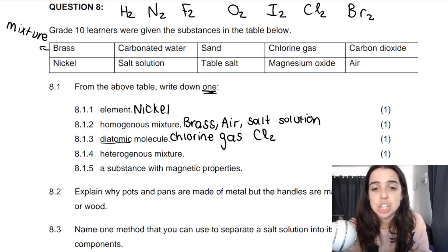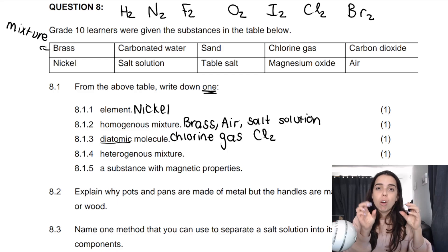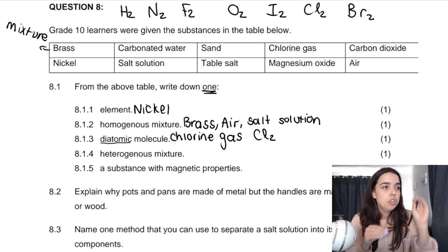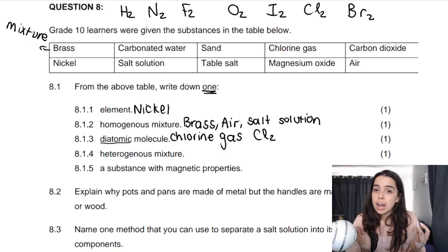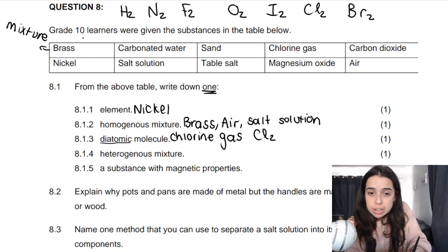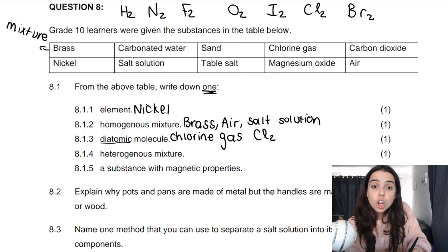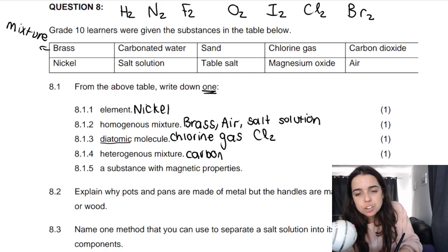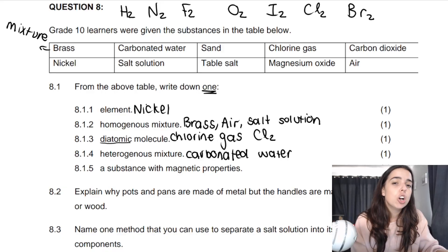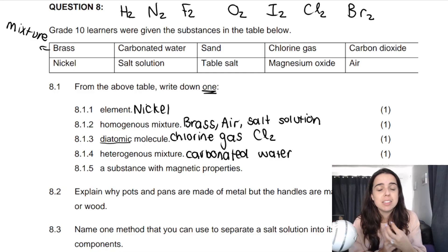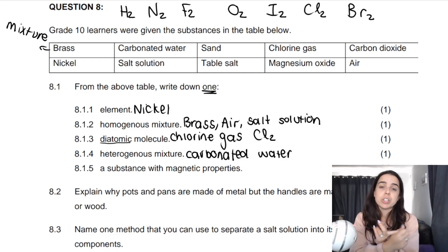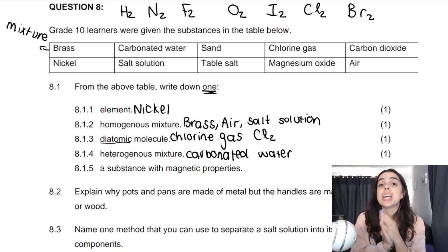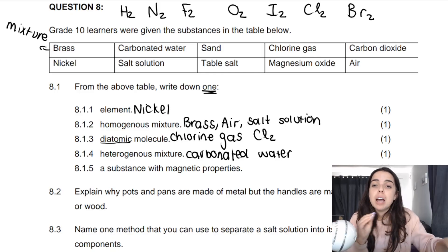A heterogeneous mixture is one where we can see the different components in the mixture — it's not uniform and you can tell the components apart with the naked eye. In this case, the correct answer — and the only answer — is carbonated water. You might be confused: carbonated water is water with gas in it, so there are bubbles. There are two separate phases — liquid water and the carbonation gas — and you can see the gas bubbles. That makes it a heterogeneous mixture.